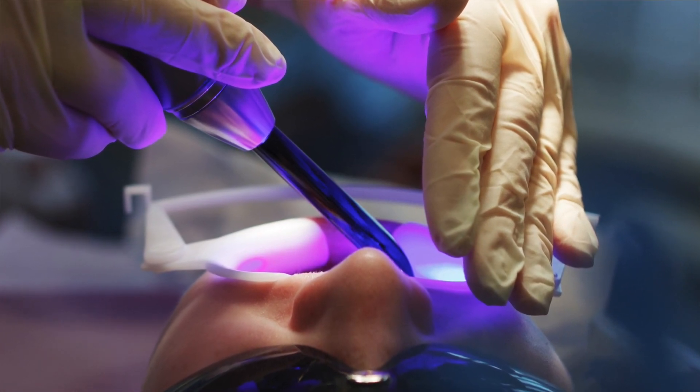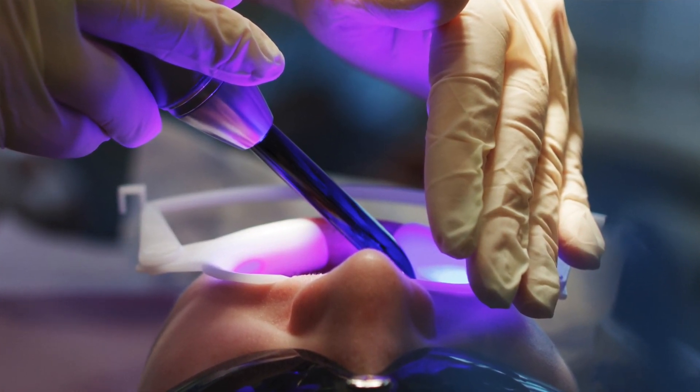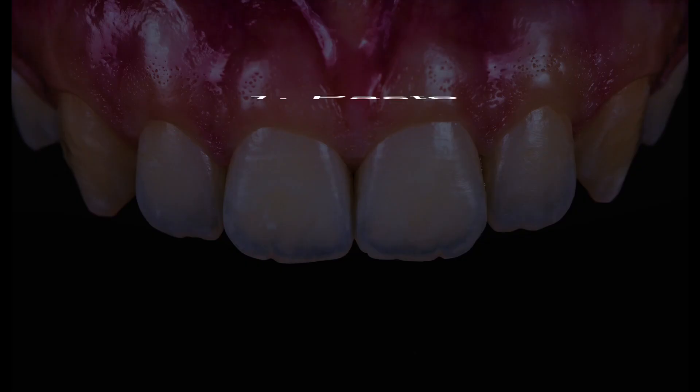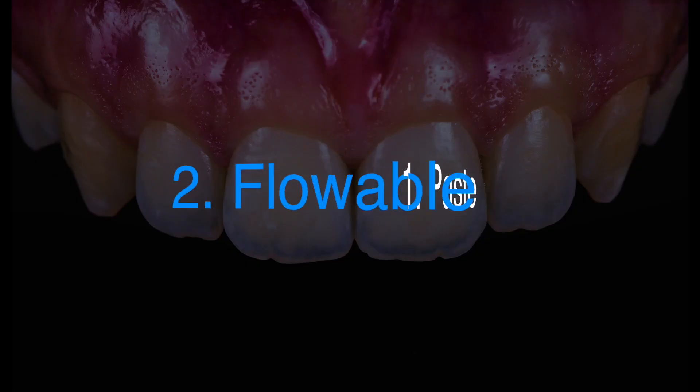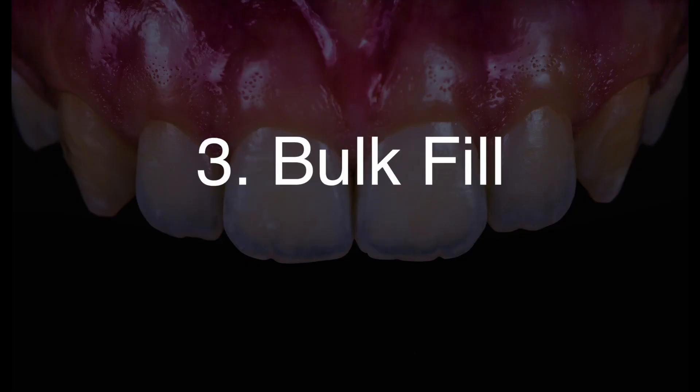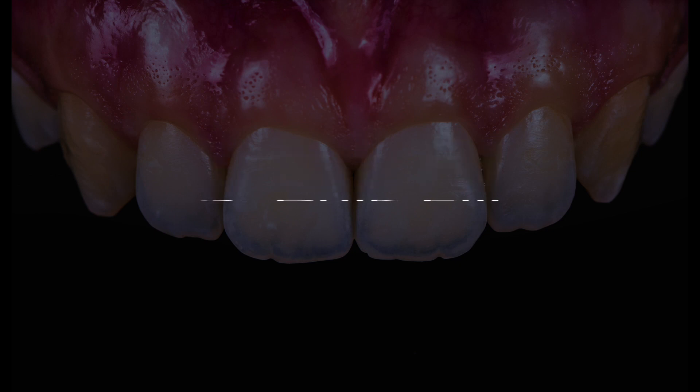Out of the seven different types of composites we're going to talk about today, these fit into three broad categories: paste composites, flowable composites, and bulk fill composites.